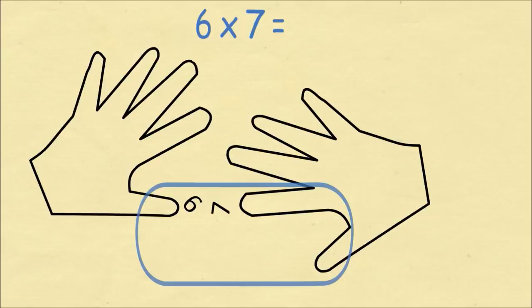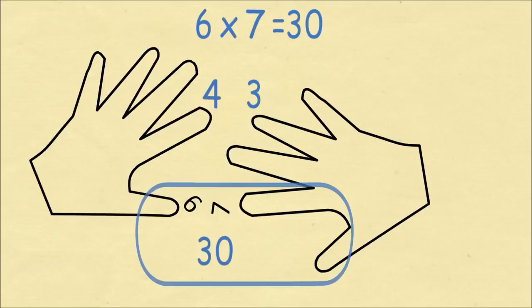We have one on the left hand and two on the right hand, which makes for 3, or 30. Now we count the fingers which are above the fingers which are touching. On the left hand we have 4 and on the right hand we have 3. We multiply these — 4 times 3 is 12. So we add 30 and 12 to get 42. And in fact 6 times 7 is 42.